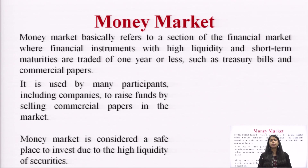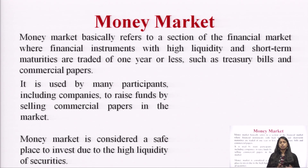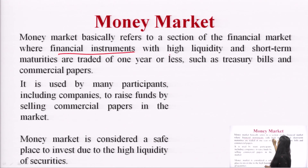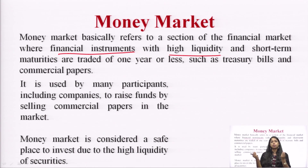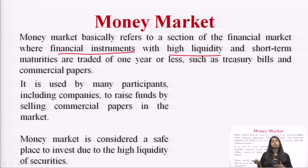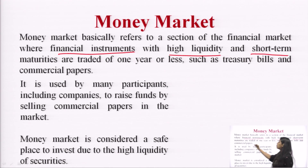The money market is that part of the financial market that deals with short-term maturities — anything less than one year. Money market refers to a section of the financial market where financial instruments with high liquidity are traded. The liquidity is high because you can convert your near-cash assets into cash within a year. If it takes more time, liquidity decreases.